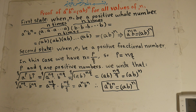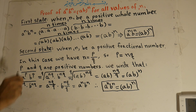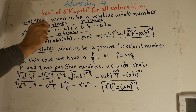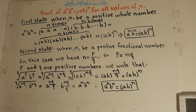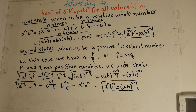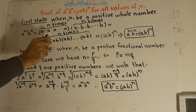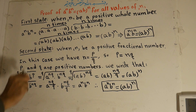Let me repeat for you. The proof that a to the power of n times b to the power of n equals ab to the power of n, for all values of n. First case: when n is a positive whole number — a to the power of n times b to the power of n equals a times a times a times a, n times.